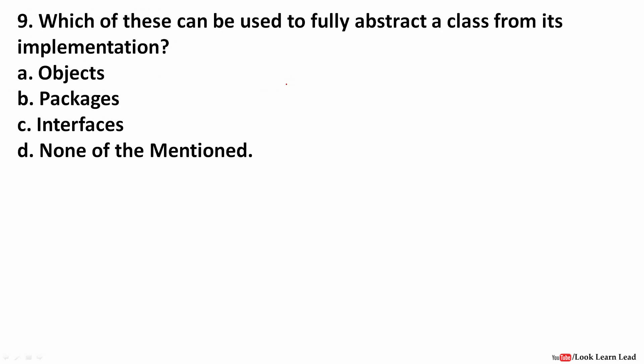Which of these can be used to fully abstract a class from its implementation? The answer is interface. When a class is completely abstract — containing all abstract methods — it is known as an interface. So a fully abstract class is called an interface.